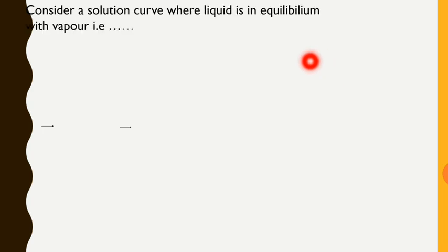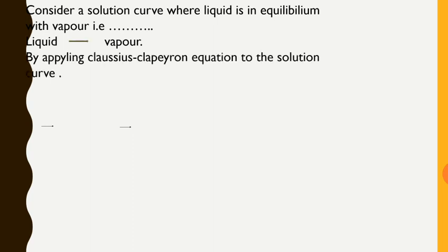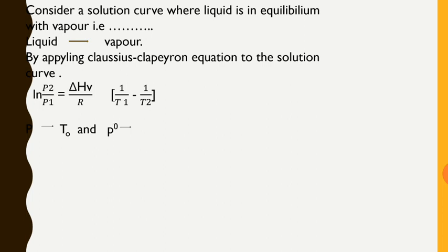Consider a solution where liquid is in equilibrium with vapor — that is, liquid and vapor are in equilibrium. By applying the Clausius-Clapeyron equation to the solution curve, we get: ln(P2/P1) = (ΔHv/R) × (1/T1 − 1/T2). We have already discussed that when pressure is P, the temperature is T0.